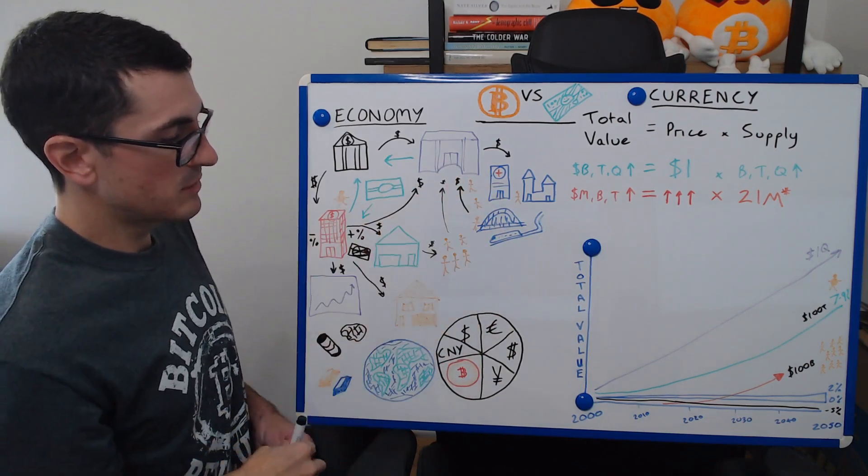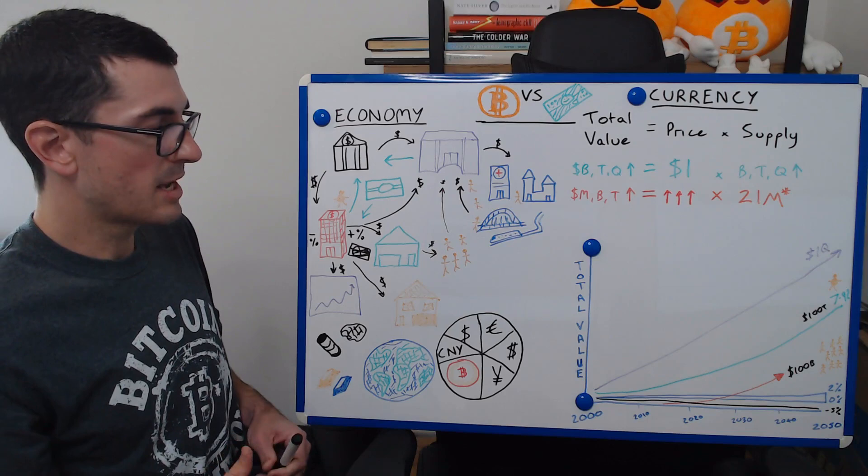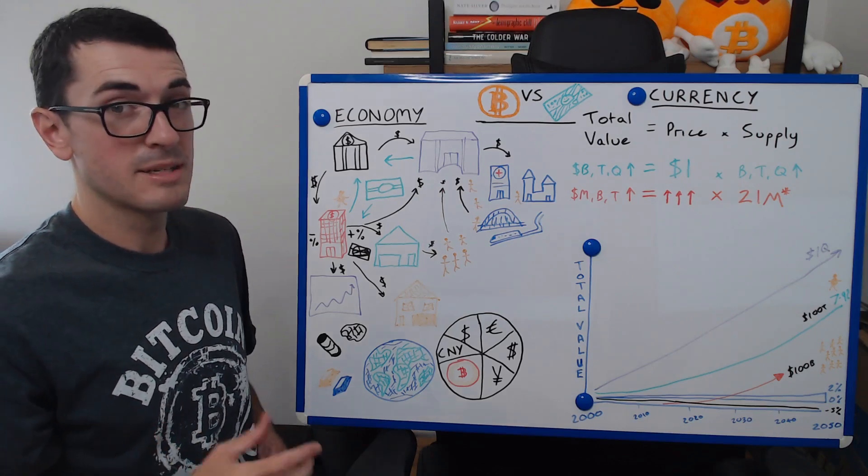So this total value can only come from these governments and central banks printing more and more of this currency. And every day, more people are educating themselves on this system, which is fairer for them. Now, that's just relative to one economy. And this is the final piece that's going to tie all together. And I hope you really understand these concepts.